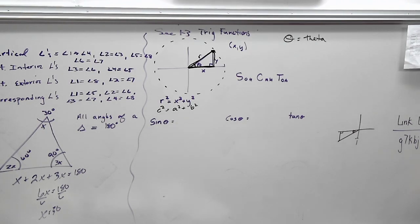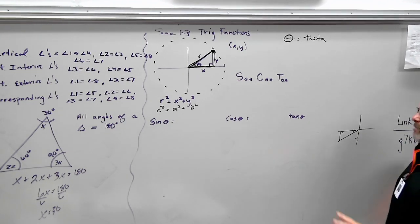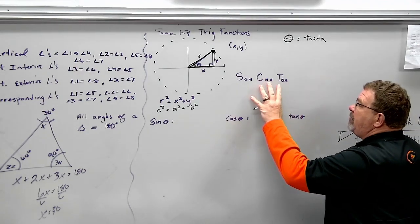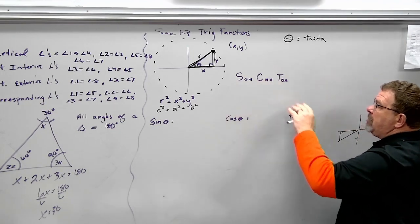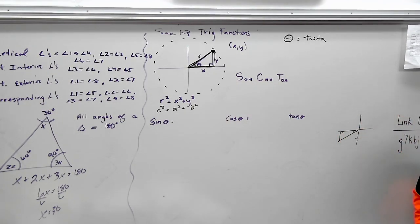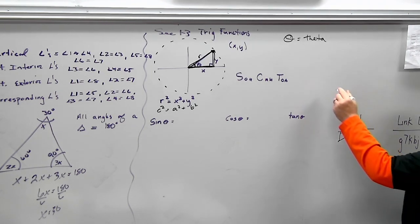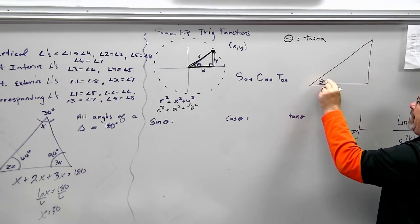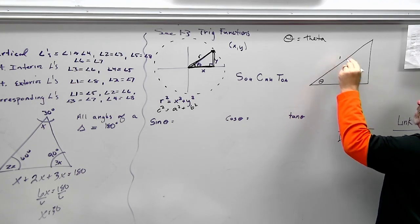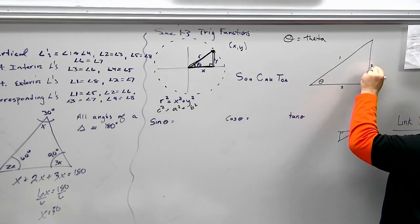We're going to run the Pythagorean theorem in every single problem. Let's move on to the six trig functions — I have the first three listed, they're the most common. You may be familiar with SOHCAHTOA. I'll draw a bigger triangle, put theta here, and label the sides one, two, and three. There are a couple terms you need to understand relative to theta.